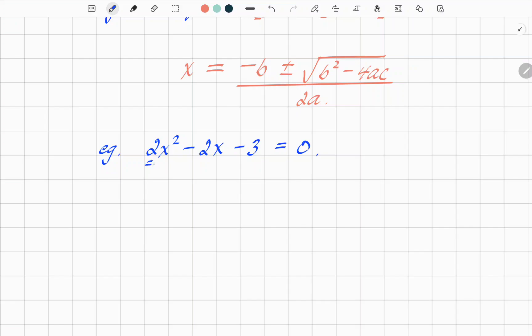So you've got a, b, and c. Watch out for one thing. a equals 2, nice and simple. But you've got to be careful: b equals minus 2, and c equals minus 3.